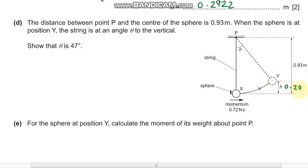So we can calculate this height. This forms a right angle triangle. This length becomes 0.93 minus 0.2922, which is 0.64. And this theta and this theta are equal because they are alternate angles.